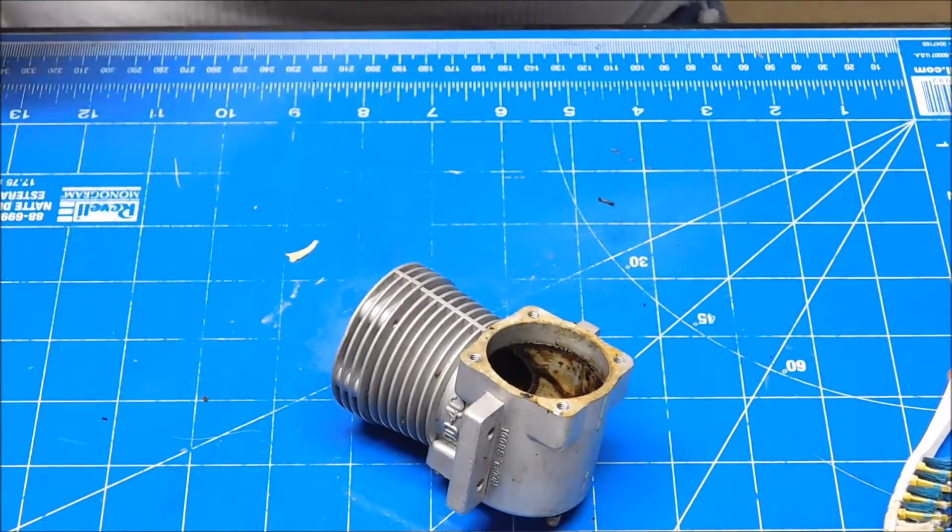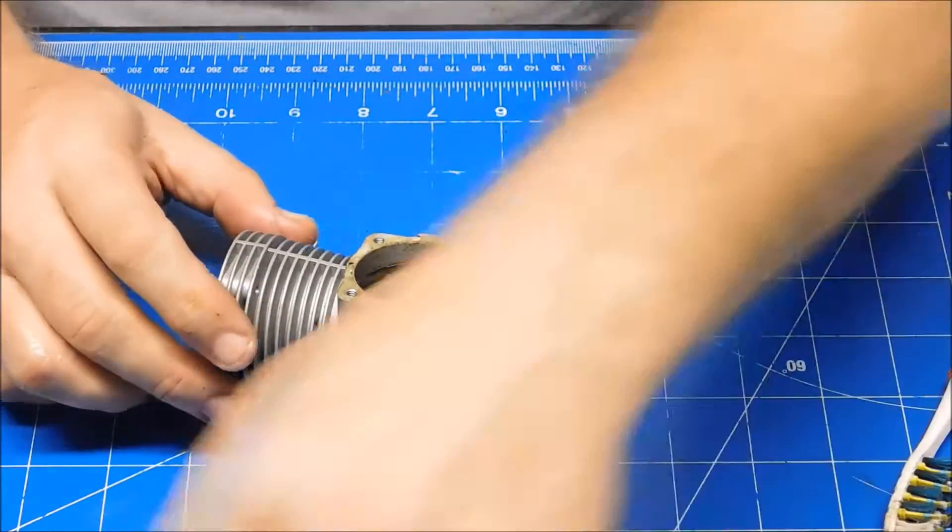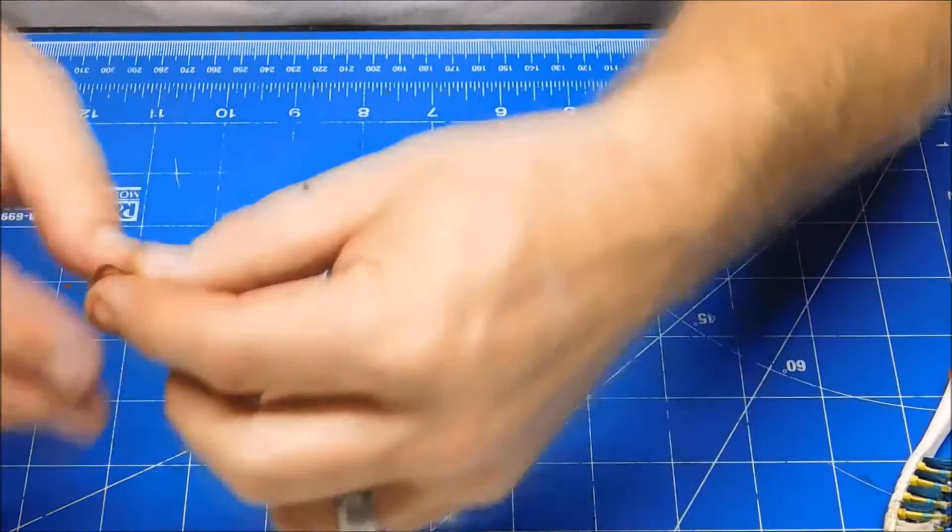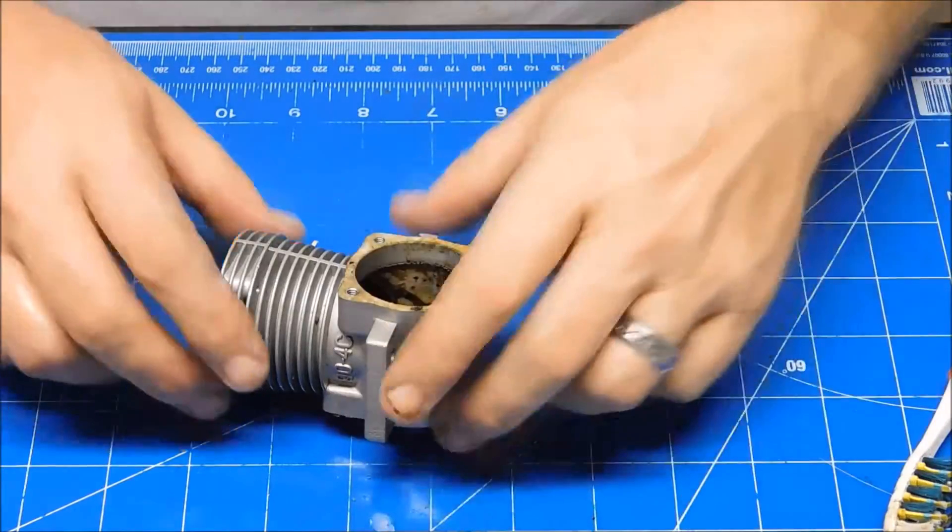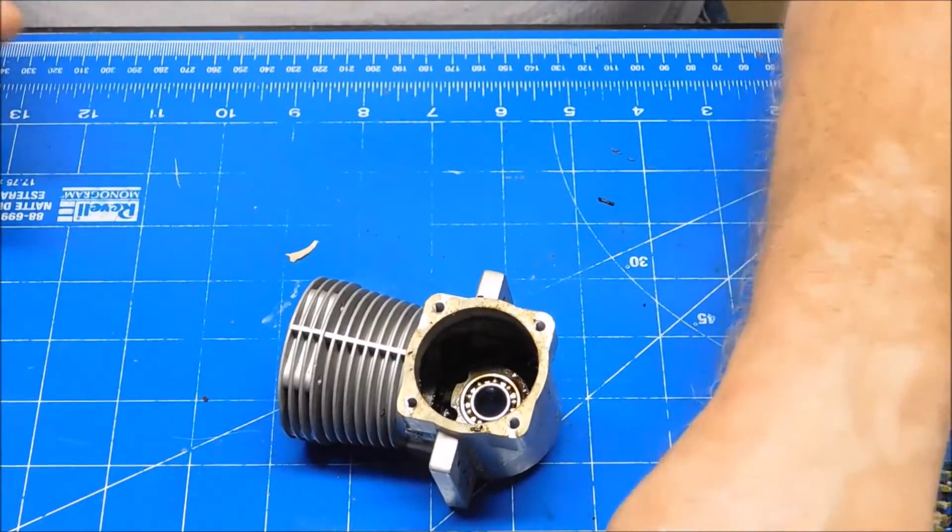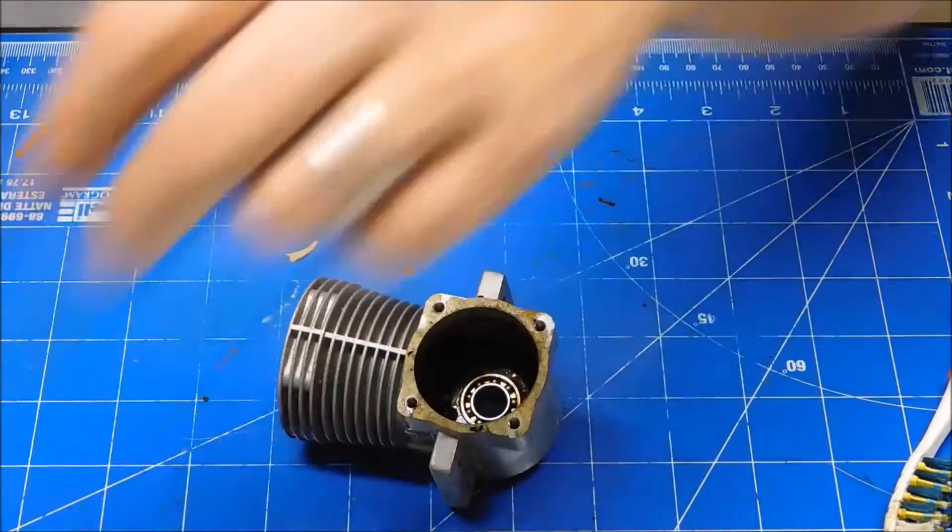But anyway, that's the first look inside of this Indian 90 engine. I'll get some parts on order and get this thing put back together.